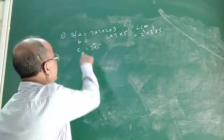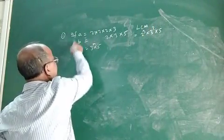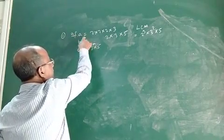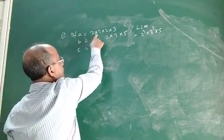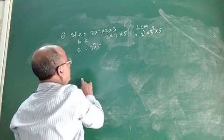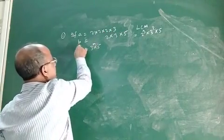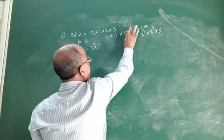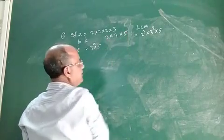Suppose you are given three numbers A, B and C. A is equal to 2 into 2 into 2 into 3, that is 24. And B is equal to 2 into 3 into 5, that is 30.